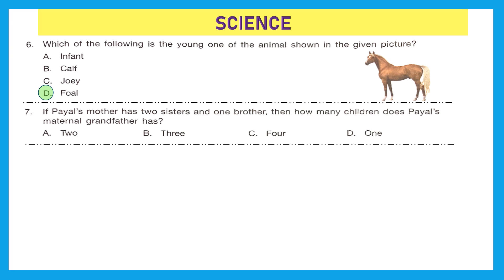Question 7: if Payal's mother has two sisters and one brother, then how many children does Payal's maternal grandfather have? Payal's maternal grandfather is Payal's mother's father. Payal's mother has two sisters and one brother, that is three siblings. Including Payal's mother, in total there would be four children. So Payal's maternal grandfather has four children.